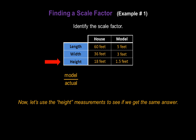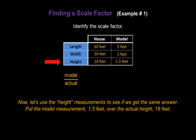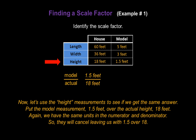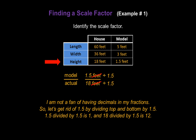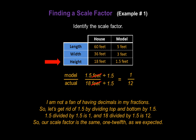Finally, let's use the height measurements. Put the model measurement, 1.5 feet, over the actual height of 18 feet. Again, the units cancel, leaving us with 1.5 over 18. To avoid a decimal in the fraction, let's divide top and bottom by 1.5: 1.5 divided by 1.5 gives us 1 in the numerator, and 18 divided by 1.5 is 12 in the denominator. So again, our scale factor is the same — 1/12 — as we expected.